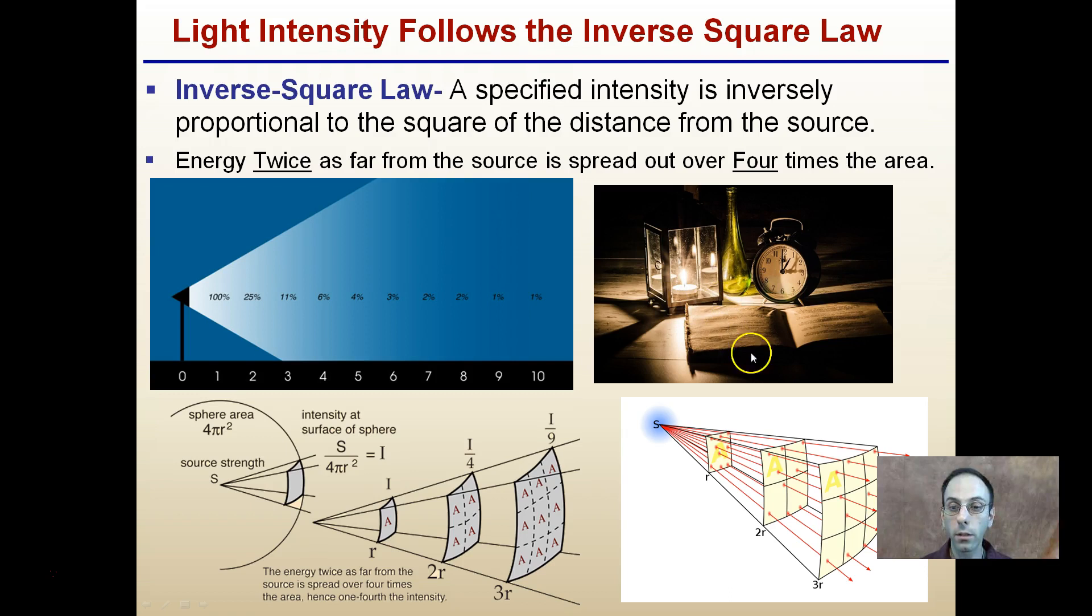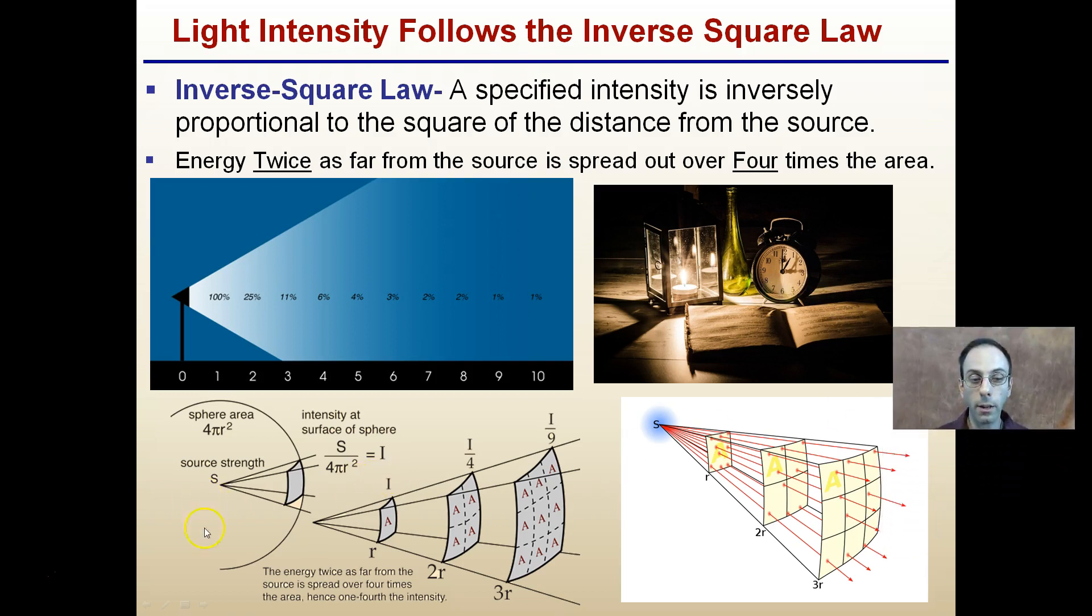You can see that here with our candle, in our book, in our clock, and as we get further away, the intensity of that light drops off significantly. And we see that here, the little mathematics here of the inverse square of the sphere. We've got our area, and it's being spread out over that four times the area as the distance becomes twice as far. So this is part of the reason why light decreases so quickly, because it's an inverse square law.